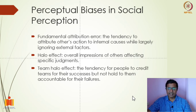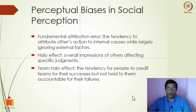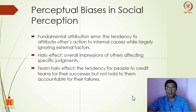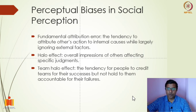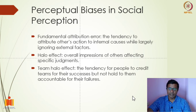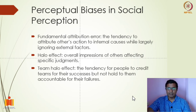The first bias is fundamental attribution error, which relates to Kelly's attribution theory. When we try to judge others' behavior, most of the time we tend to attribute it to internal cause — we assume that if somebody behaves in a certain way, it is because they choose to do it, because of their own limitation, and we largely ignore external factors. If somebody has failed or didn't perform well, we attribute it to incapability — internal factors — and largely ignore external factors like whether they got enough resources or support.